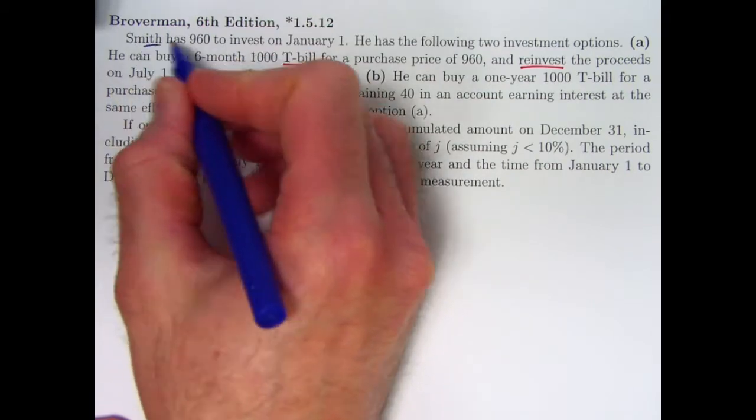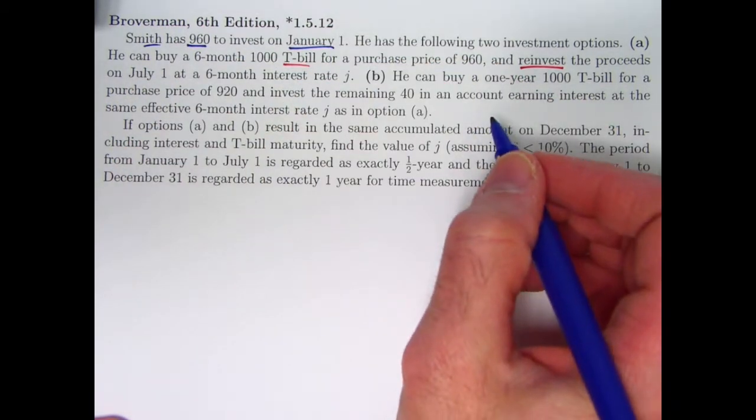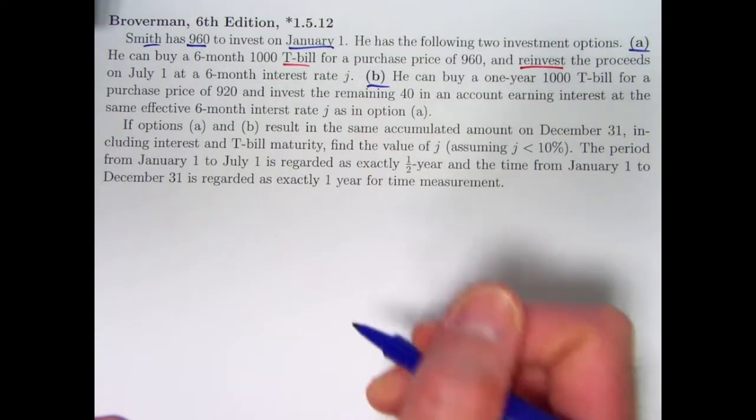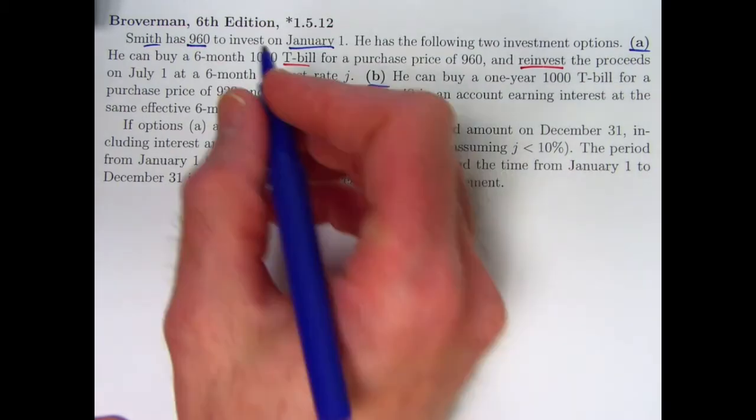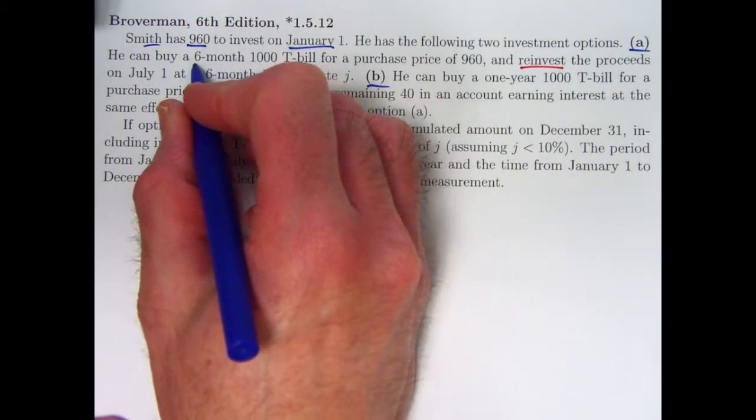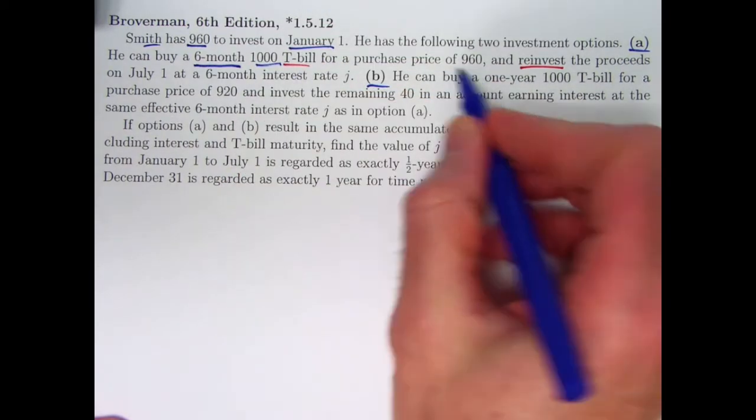Smith has a certain amount of money, $960, to invest at the beginning of the year January 1st. There are two options, options A and B. They both involve T-bills and they both involve reinvestments. In option A, the T-bill has a term of six months. It's going to mature in six months. It's quoted as a thousand T-bill.